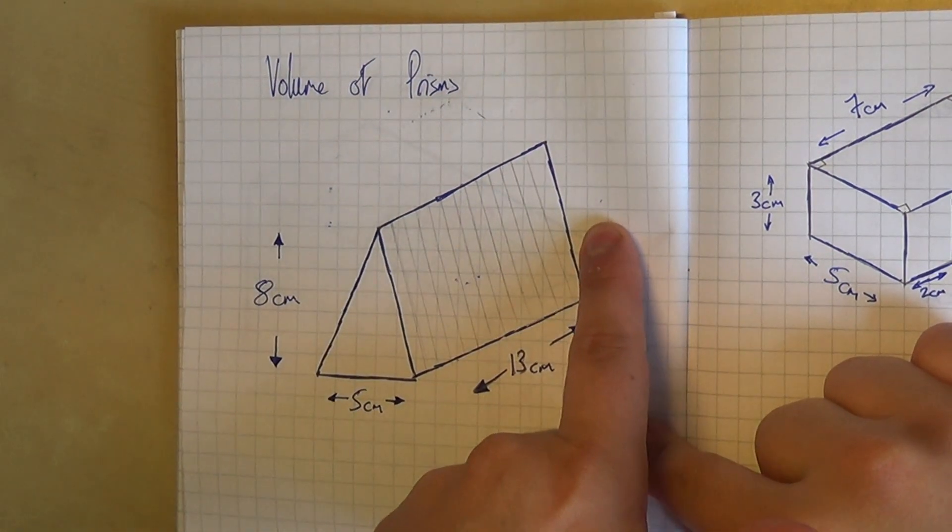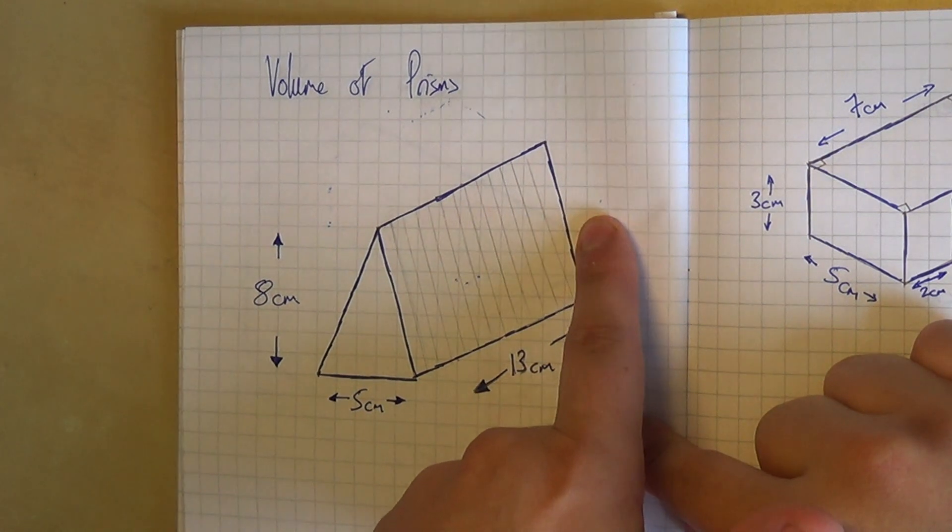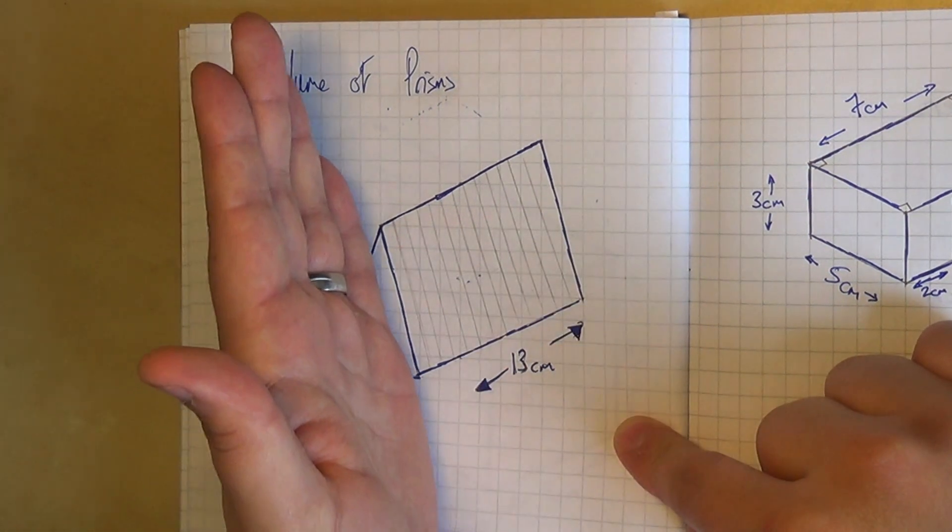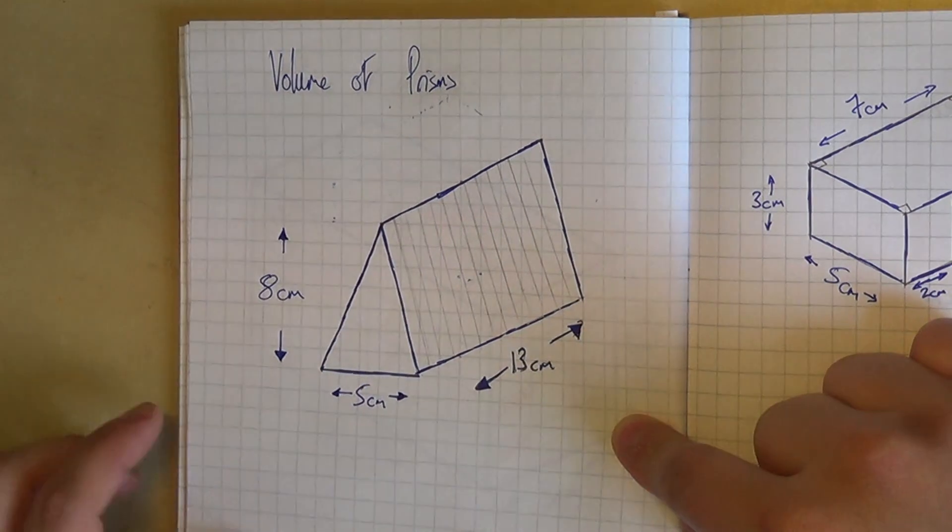And when I say the same at the back it means exactly the same, the same way up, the same size, the same proportion, exactly the same shape. And it's joined strictly with rectangles in between.